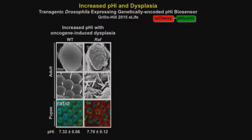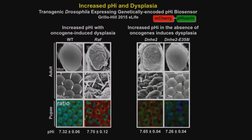We then asked: what if we just increase pH in the absence of an oncogene? We also get dysplasia, by overexpressing a sodium-proton exchanger — a proton efflux transporter. It's pH-dependent because expressing a mutant transporter that lacks proton efflux has no effect on the eye phenotype. Because of the beauty of Drosophila genetics, we can now use modifier screens to identify what's causing this dysplasia.